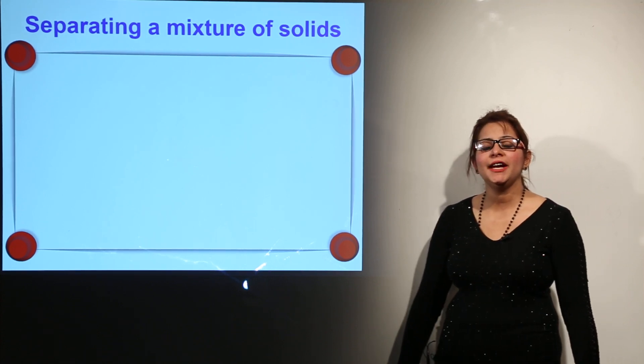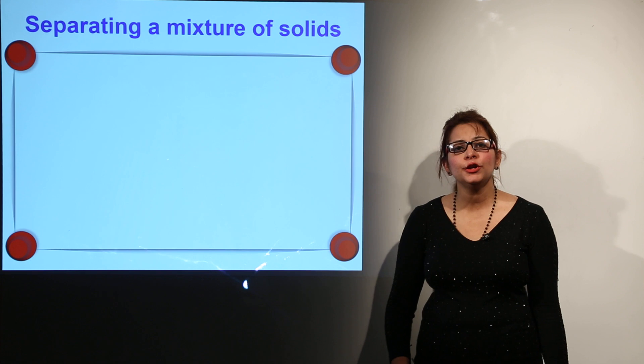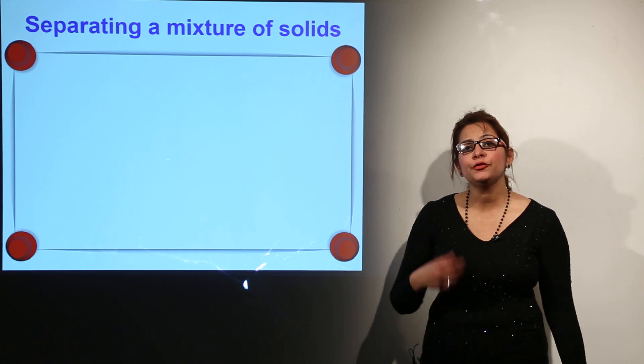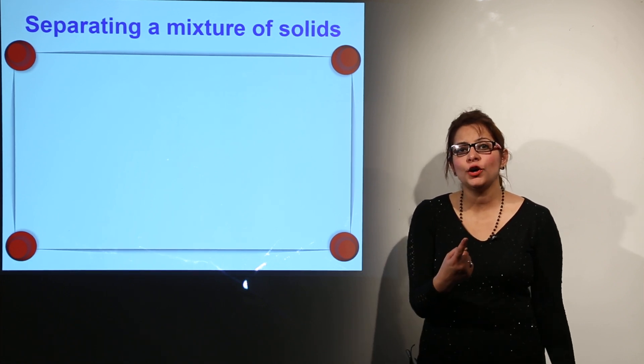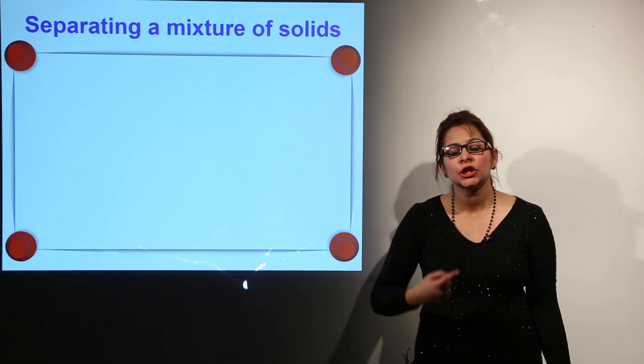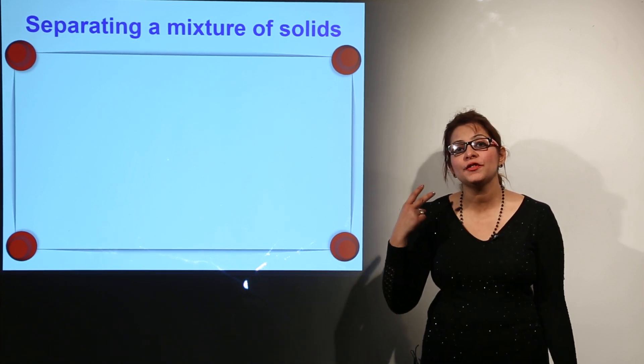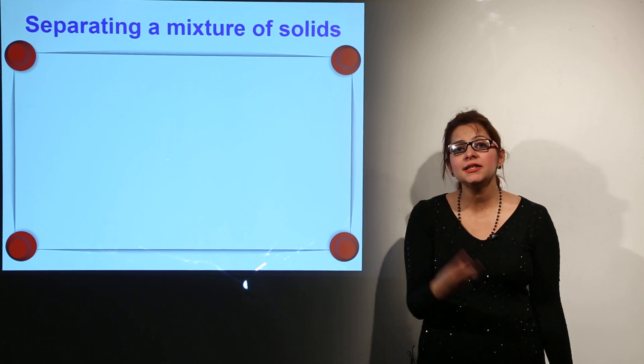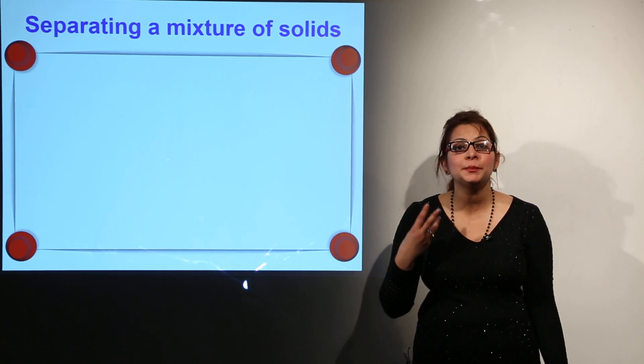Now I have told you that we come across mixtures of solids and we can use different techniques. The first technique was the use of a particular solvent. The second technique was the property of sublimation. And the third technique which we are going to use can be a special property.